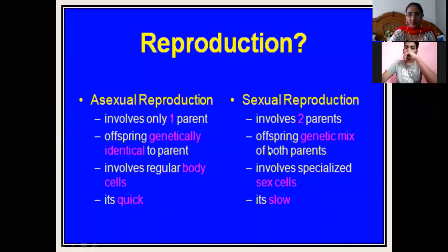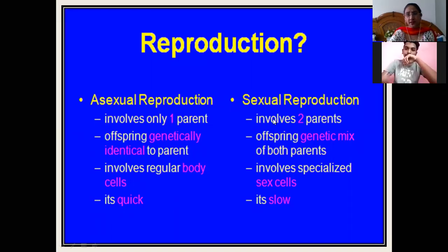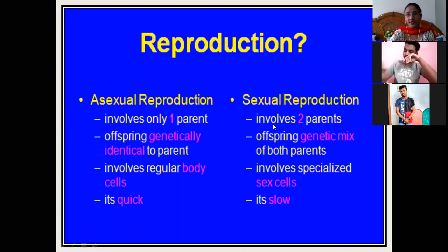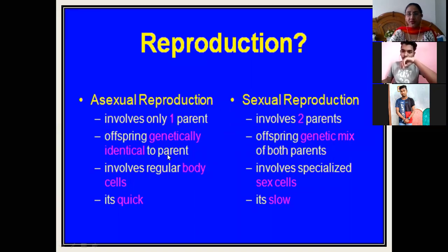There are basically two modes of reproduction: asexual reproduction and sexual reproduction. The major difference — asexual reproduction involves only one parent, whereas in sexual reproduction it involves two parents. In sexual reproduction, a proper embryo is formed through fusion of the male and female gametes. Offspring of asexual reproduction are genetically identical to the parent because only one parent is involved.